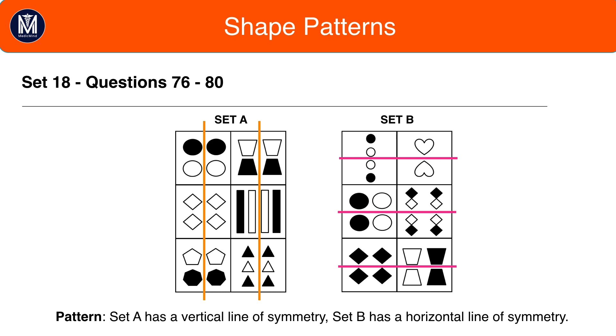There isn't a colour pattern present here, but looking closely, we can see that there is a combination of shape and position. In set A there is a vertical line of symmetry and set B there is a horizontal line of symmetry. Box 2 in set B should be a good trigger because it hints towards symmetry due to the rotation of the heart.